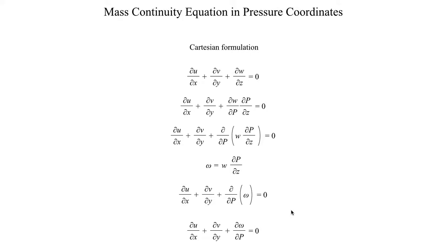If you check the units, you'll find they are dimensionally consistent. The terms du/dx and dv/dy have units of per second — meters per second in the numerator, meters in the denominator, the meters cancel. For dω/dp: omega is in units of pascals per second in the numerator, and the denominator has units of pascals; the pascals cancel, leaving units of per second as well.